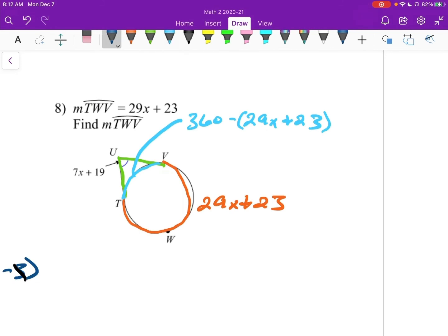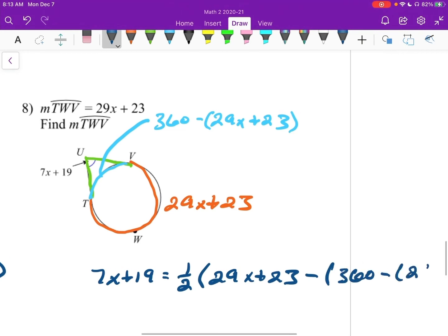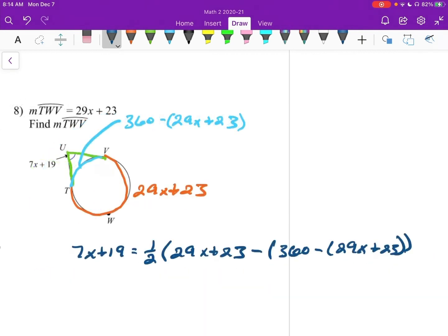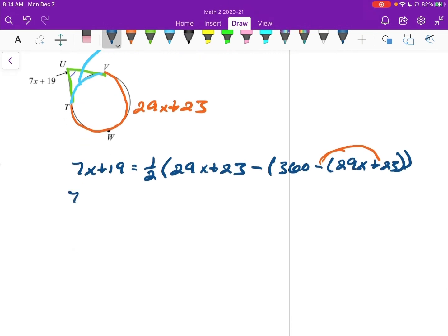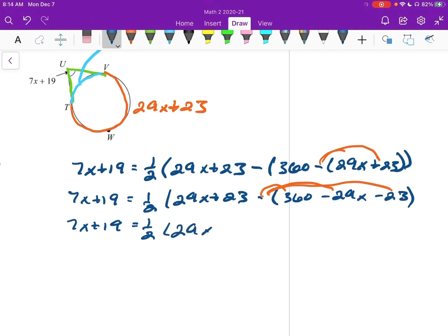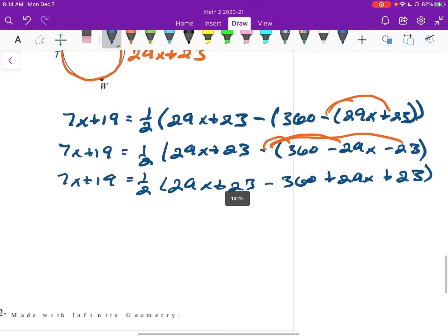Now we could plug into the one half the big arc minus the small arc. Oh, and there needs to be parentheses right there. So I could say, well, 7X plus 19 equals one half the big arc, 29X plus 23, minus the small arc, 360, minus 29X plus 23. Okay. So we've got our equation here. And so I'm going to start off by distributing this negative. So I'll say, well, this is 7X plus 19 equals one half 29X plus 23, minus parenthesis, 360, minus 29X, minus 23. Now I'll distribute the other negative. Probably could have done that earlier. Oh, I'll say 7X plus 19 equals one half 29X plus 23, minus 360, plus 29X, plus 23.